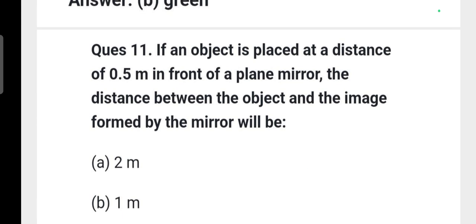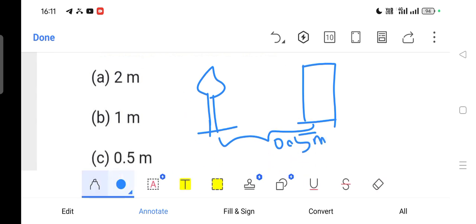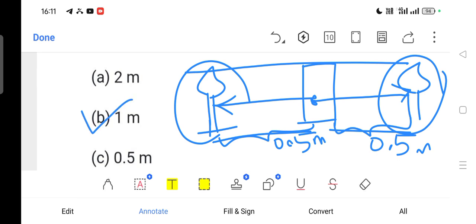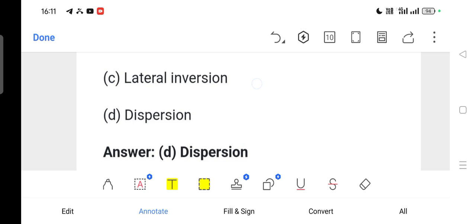Next question: If an object is placed at a distance of 0.5 meter in front of a plane mirror, the distance between the object and the image formed by the mirror will be 1 meter. Suppose this is a mirror, if a candle is placed at 0.5 meter distance, the image will also form at 0.5 meter behind the mirror. So total distance will be 1 meter. Then option B is correct. Next question: Splitting of white light into 7 colors is called dispersion. Option D is correct.